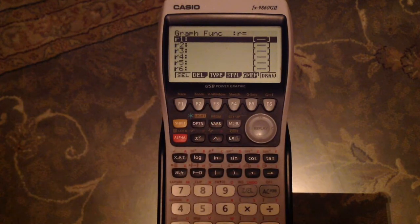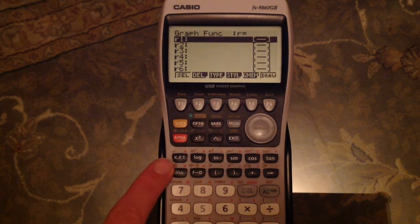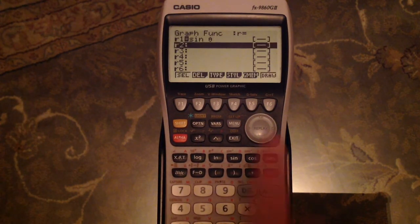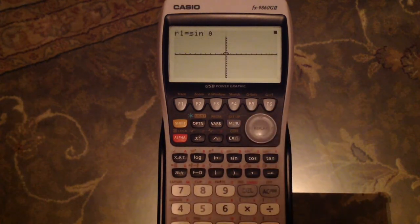Now all our variables are going to be entered using this button, xθt. It will automatically put a theta in, and very simply, all we do is we type in the equation that we want. So sin θ, store that, draw, and there's our graph.